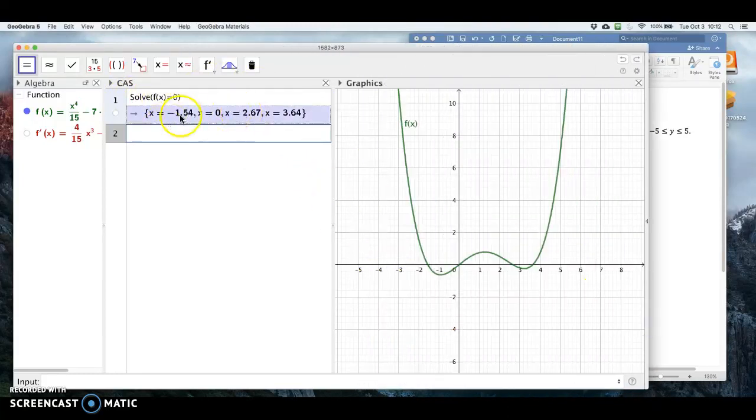I'm going to see if that matches up. I've got minus 1.54, it's about here. Zero, 2.67, two and two thirds. And then I've got 3.68 as this last x-intercept.